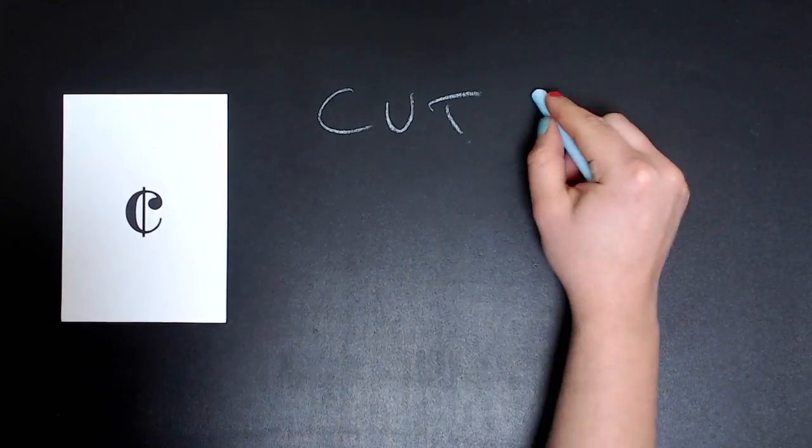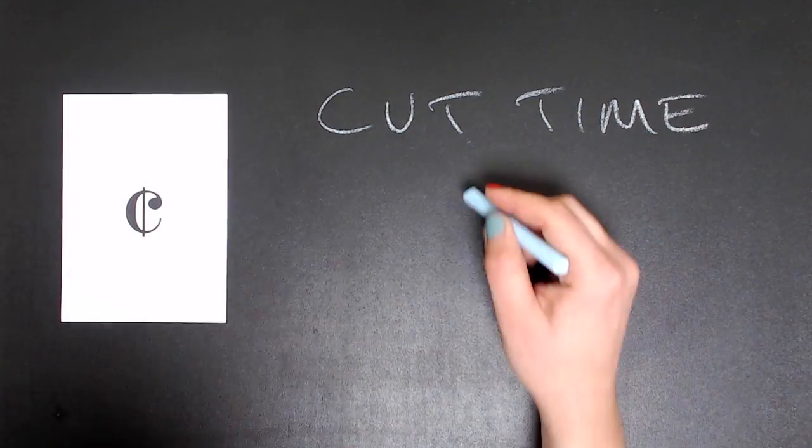A C with a line through it stands for cut time, which is the same as 2/2. Two half note beats in a measure.